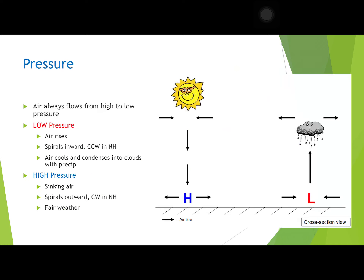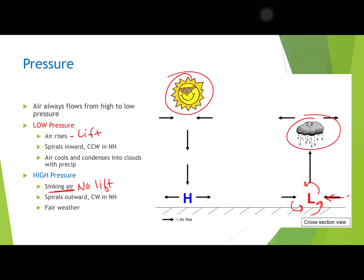We also have different pressure systems. In a low pressure system, air rises — that causes lift, which means clouds can form. Cold fronts always spin counterclockwise and inward. High pressure, on the other hand, is sinking air — there's no lift, so when you have high pressure you have nice sunny days and blue skies. High pressure goes clockwise and outward. So: low pressure means stormy days, high pressure means nice fair sunny days.